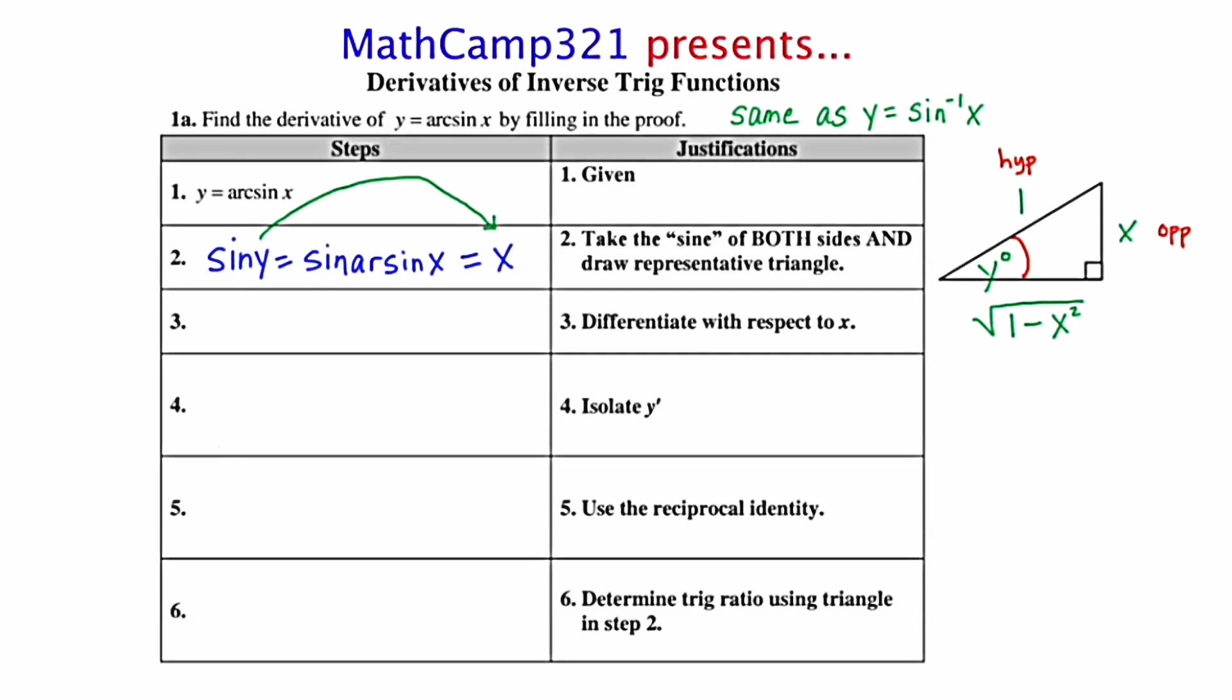Let's move on to step number three of our proof. Differentiate with respect to x. If I take the derivative of the left-hand side with respect to x, I'm going to end up getting cosine of y times dy dx, or the cosine of y times y prime. On the right-hand side, the derivative of x is simply 1.